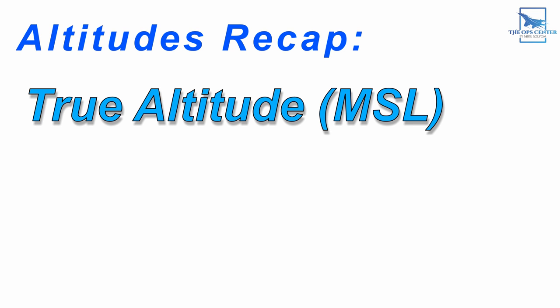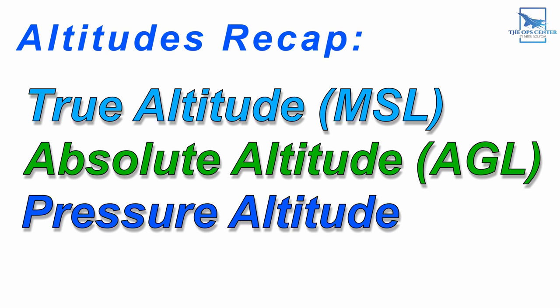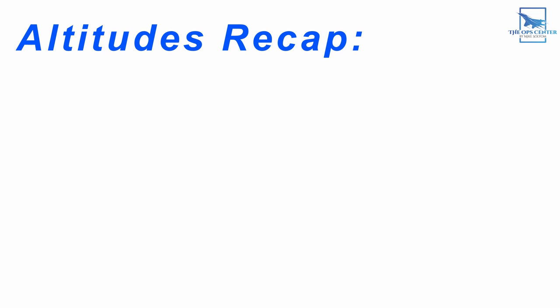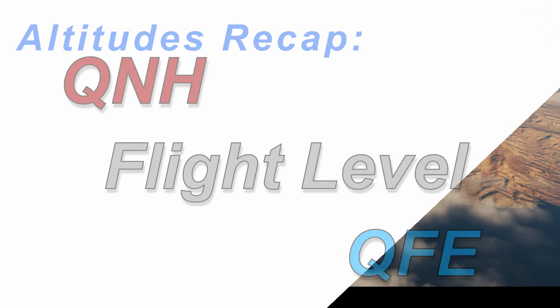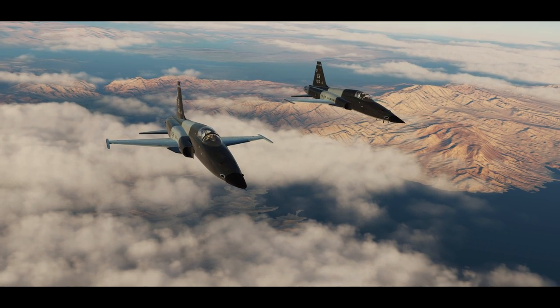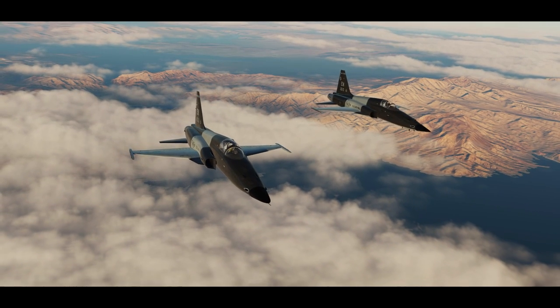So far we covered how the aviation community talks about altitude, including true altitude — which is altitude above mean sea level — absolute altitude, or an aircraft's height above ground level, pressure altitude as measured by the international standard atmosphere, and density altitude, which is pressure altitude corrected for temperature differences. We also went over how QFE, QNH, and flight level were variations of these altitudes. Understanding altitude and the definitions used by pilots will help you in understanding other aviation concepts.